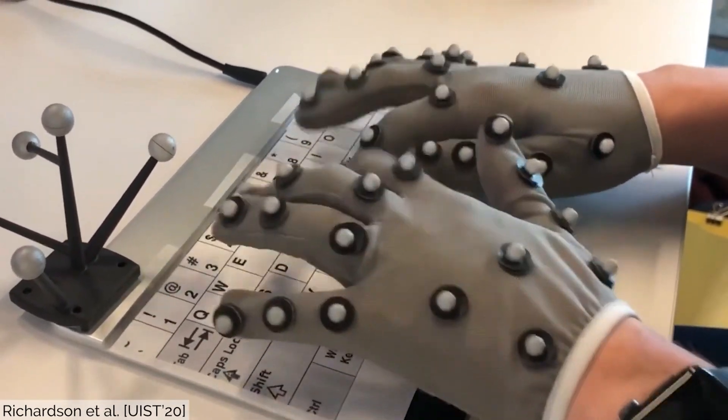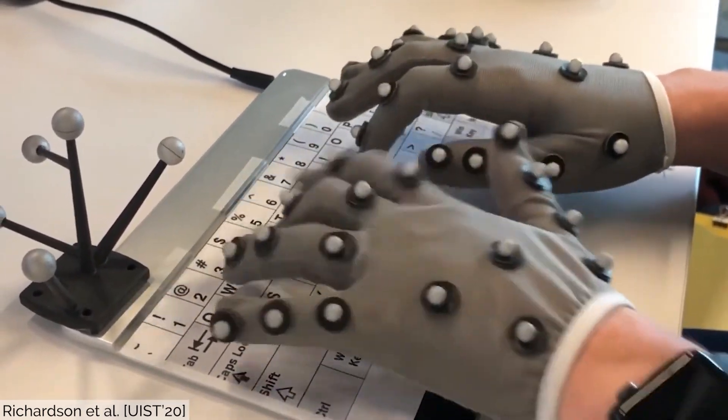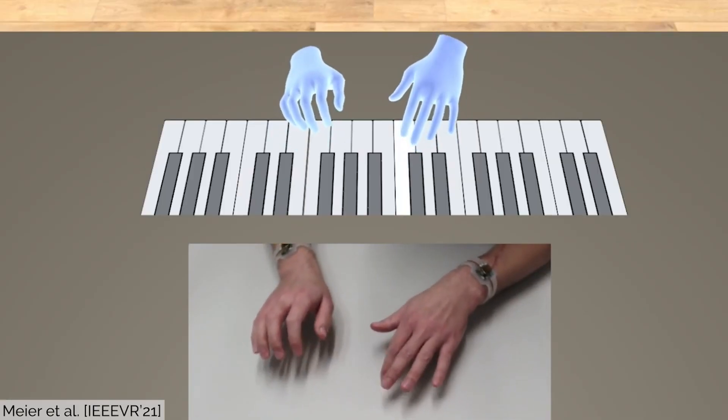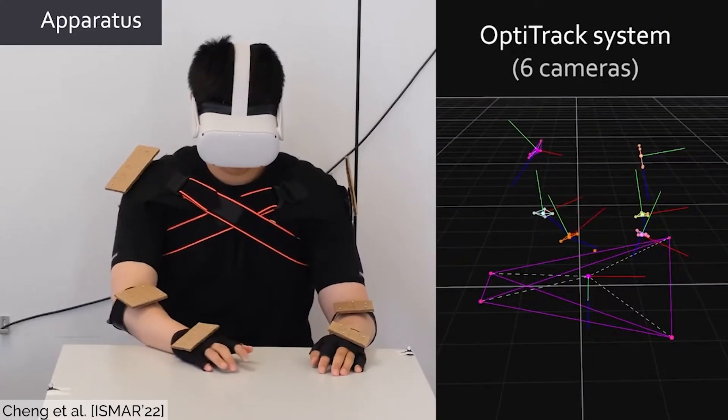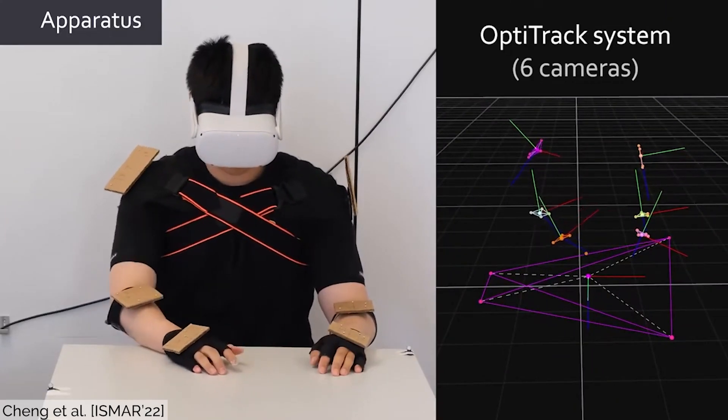To enable more dexterous and rapid input, such as typing, additional instrumentation of the hand or external motion capture has been necessary to achieve practical input accuracy.